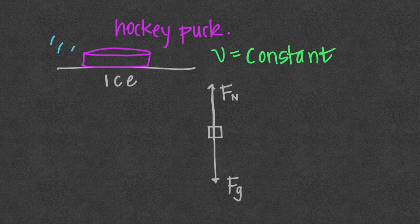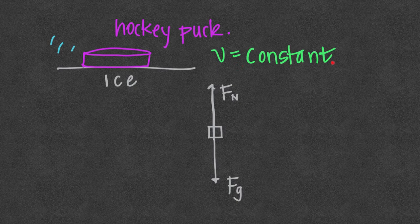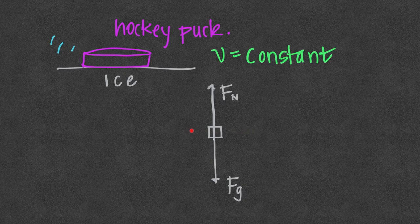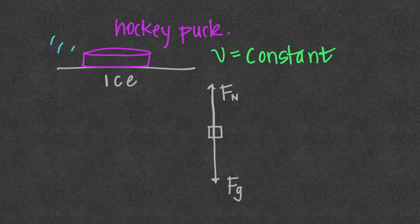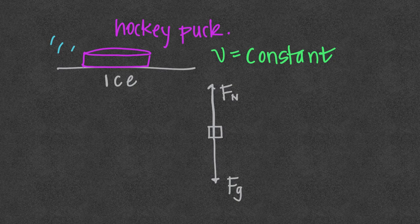Now since the hockey puck is moving at a constant speed it is not being accelerated at all. There is no net force in the horizontal direction. There is nothing pushing or pulling on the hockey puck as it slides across this nearly frictionless ice, so our coefficient of friction is equal to zero.